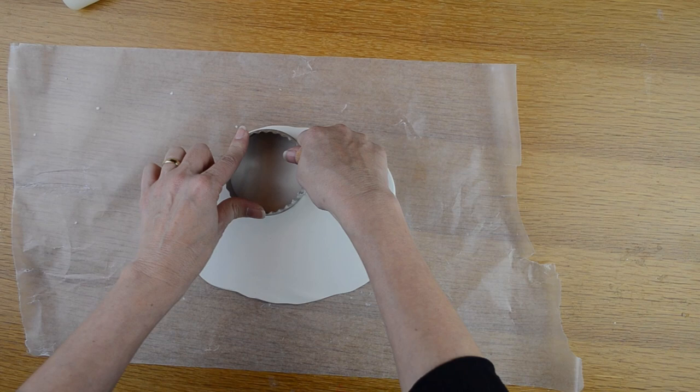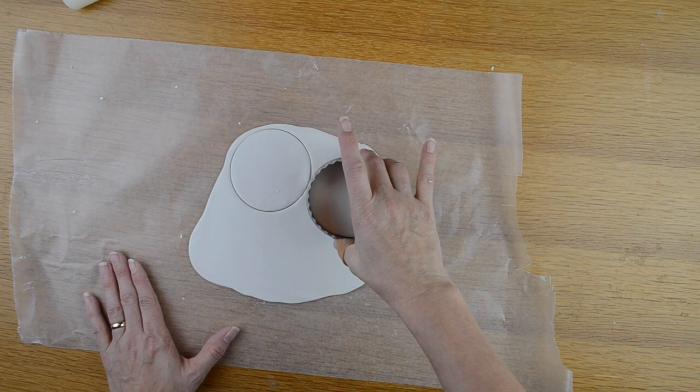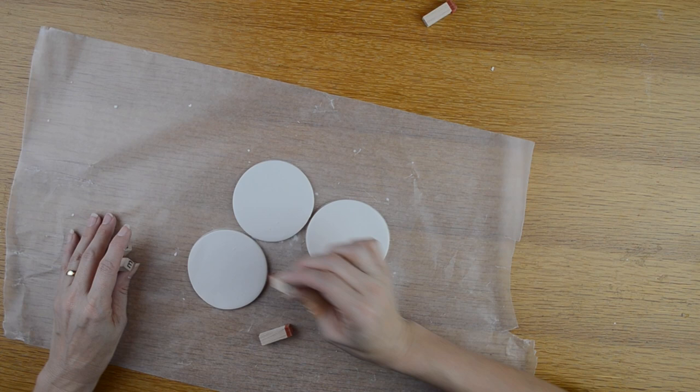So now I'm going to take my circle cookie cutter and cut out some circles and I am placing them down to where I will get as many circles as I can out of this batch here.